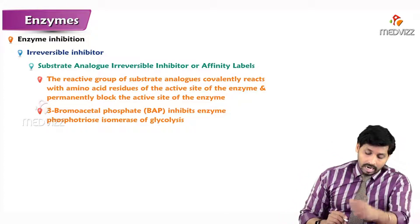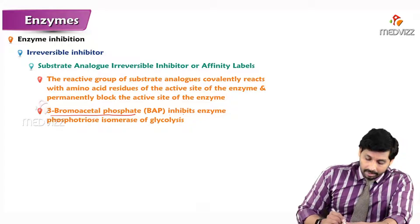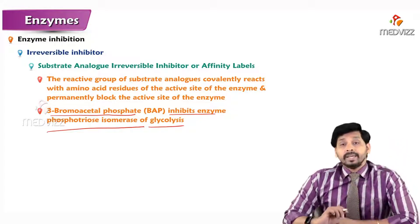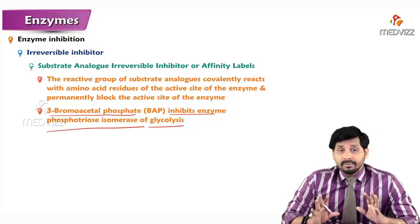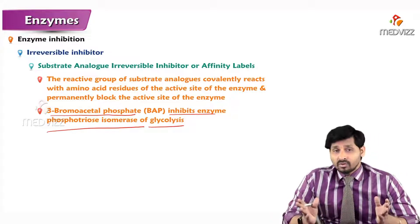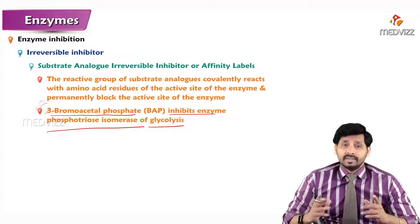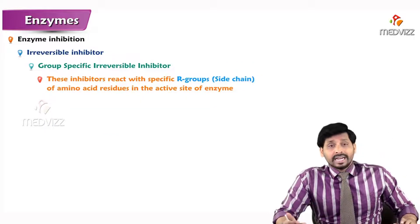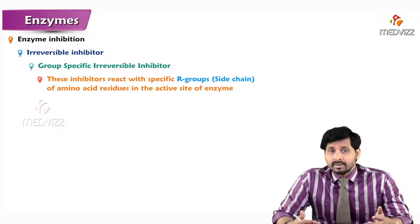If you increase the substrate concentration, this will not relieve the covalently attached inhibitor from the active site of the enzyme. A best example is 3-bromoacetrol phosphate (BAP), which inhibits the enzyme phosphotriose isomerase of glycolysis, blocking the conversion of dihydroxyacetone phosphate to glyceraldehyde-3-phosphate.